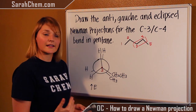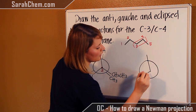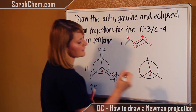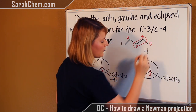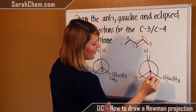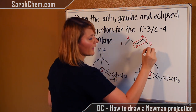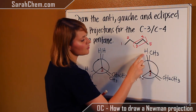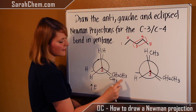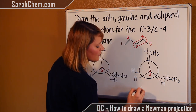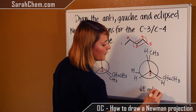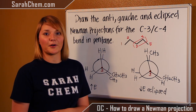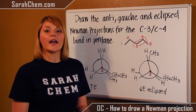You can also draw a slightly lower energy eclipsed conformer with the same initial setup — C3 still in front with its ethyl and two hydrogens, and the slightly tilted back axis. In this version, the bulkiest group is placed in front of a hydrogen rather than the methyl, so there's less steric bumping and lower energy repulsion. The other two groups fill in the remaining positions. However, all eclipsed conformers will always be higher in energy than either the gauche or anti conformers. That's how you draw anti, gauche, and eclipsed conformers.